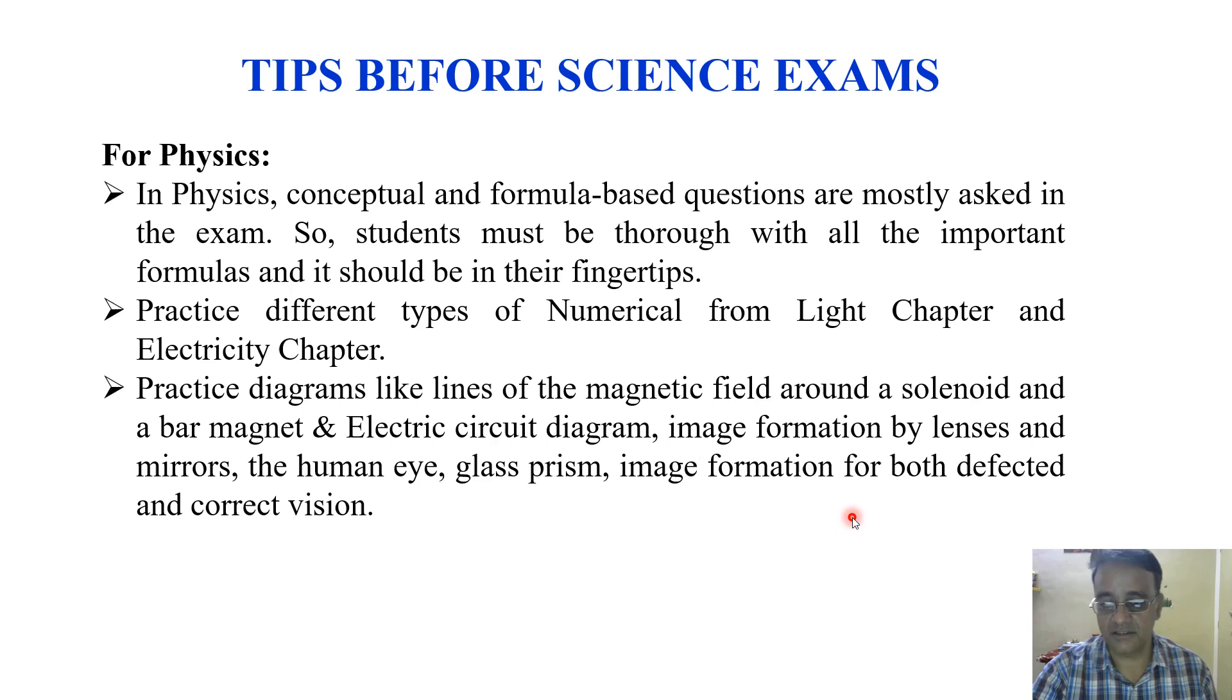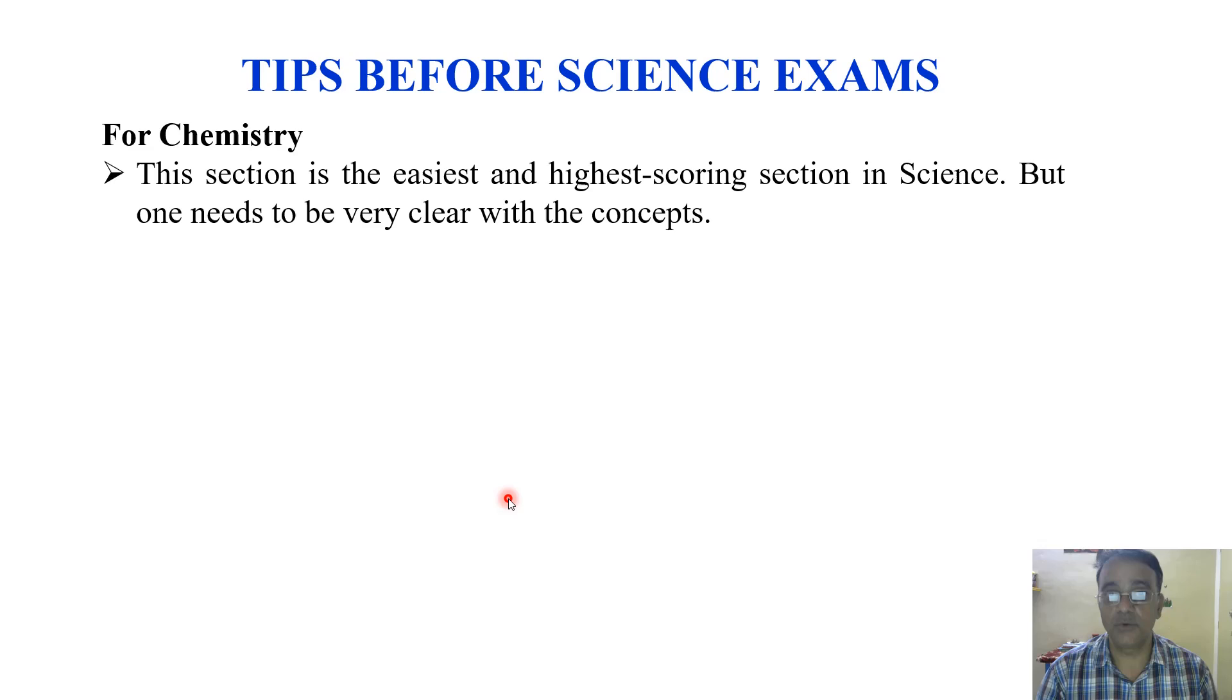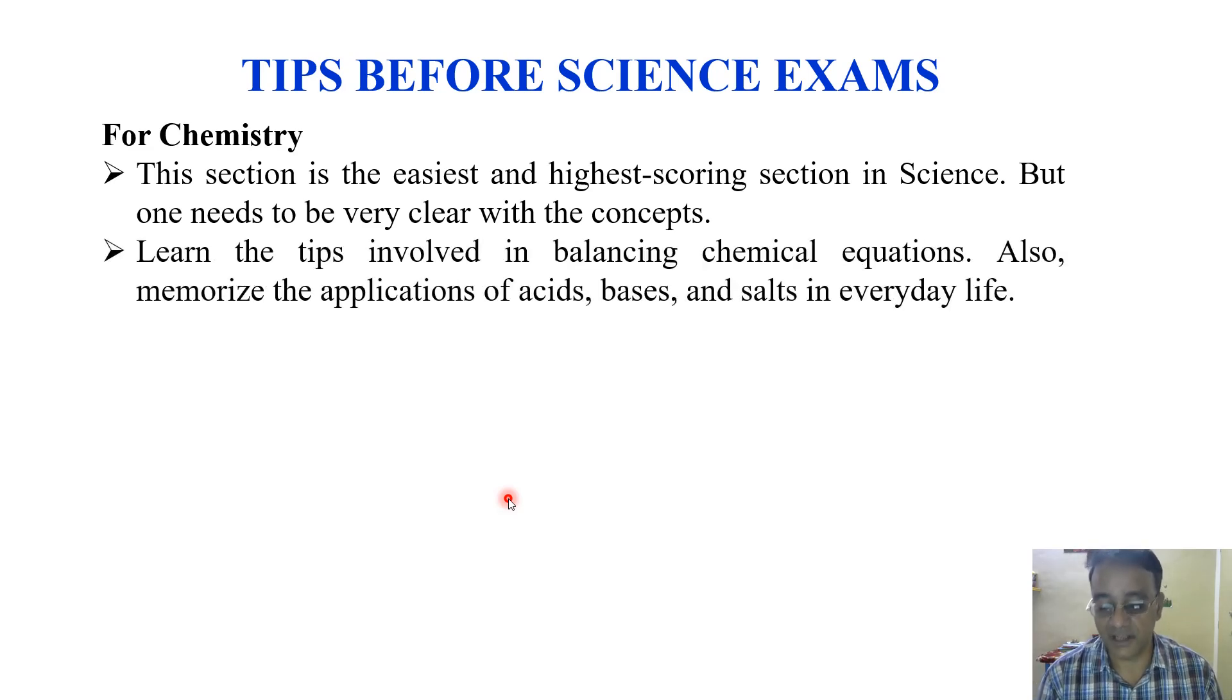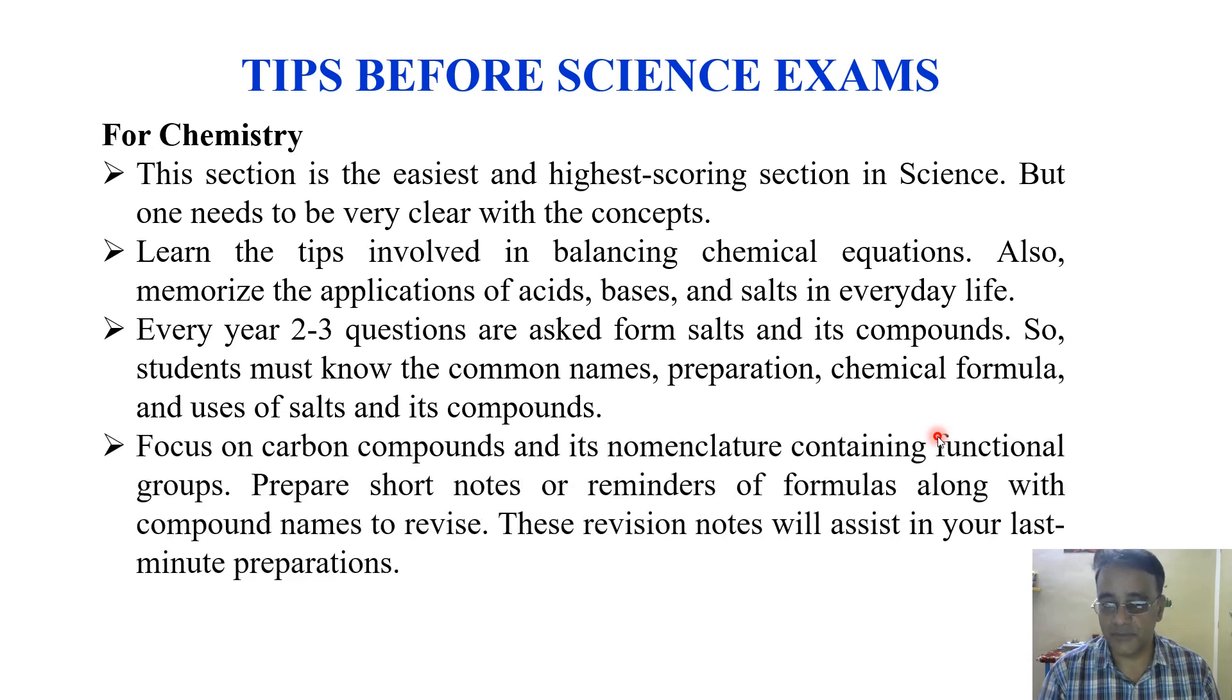For Chemistry, this section is the easiest and highest-scoring section in science, but you need to be very clear with the concepts. Learn the tips for balancing chemical equations in the first chapter, which carries good weightage. Also memorize the applications of acids, bases, and salts in everyday life. Every year two to three questions are asked from salts and their compounds, so students must know the common names, preparation, chemical formulas, and uses. Focus on carbon compounds and their nomenclature containing functional groups. Prepare short notes as reminders of formulas along with compound names—these revision notes will help in last-minute preparation.